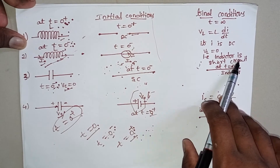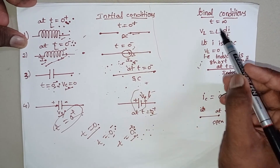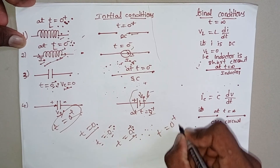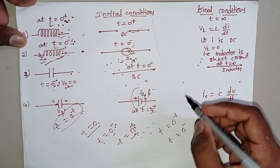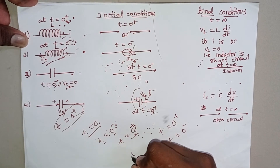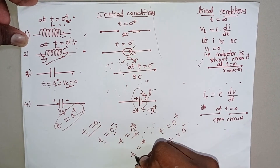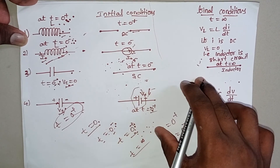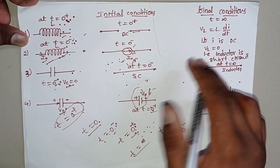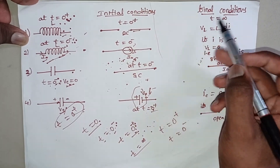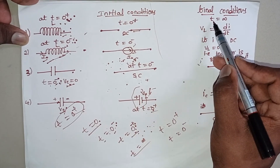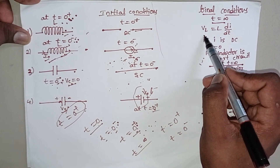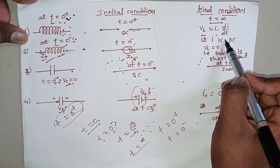We also have final conditions. Initial conditions are at T = 0+ and T = 0−, and the final condition is at T = ∞. This final condition is also known as the steady-state condition. We know the voltage across the inductor is VL = L × dI/dt.